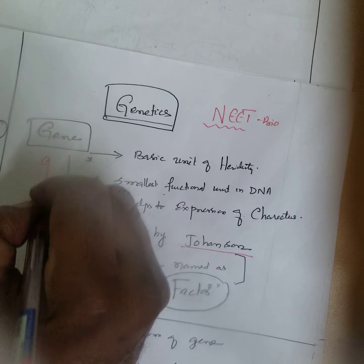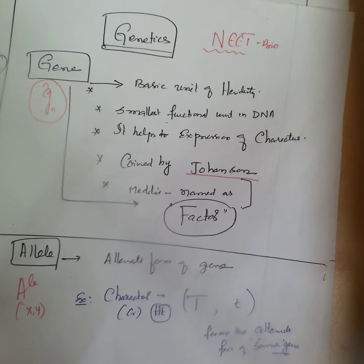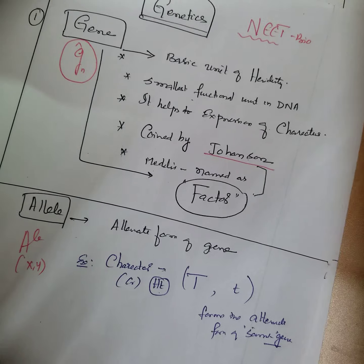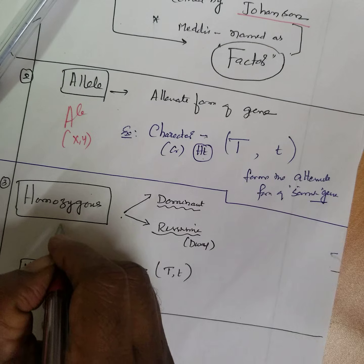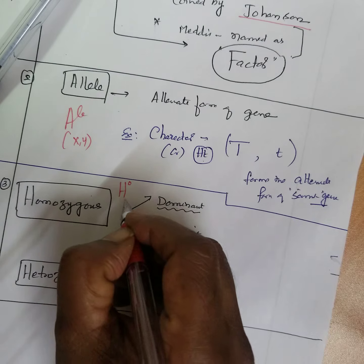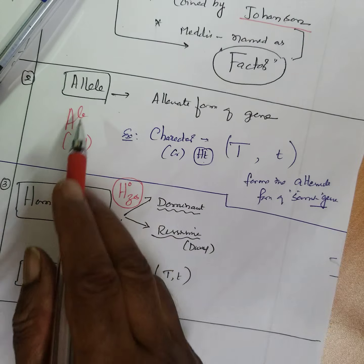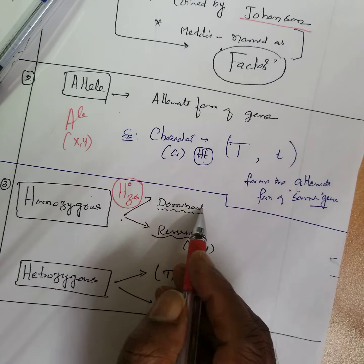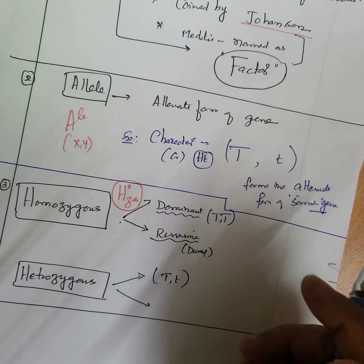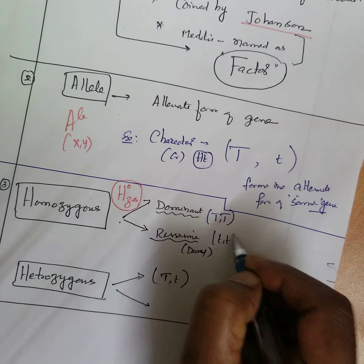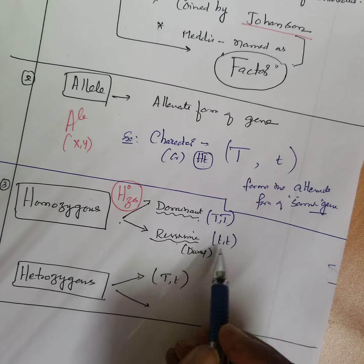Next is homozygous. These alleles are of two types: homozygous and heterozygous. For the dominant character, homozygous, I'll write TT for tall and tt for dwarf.